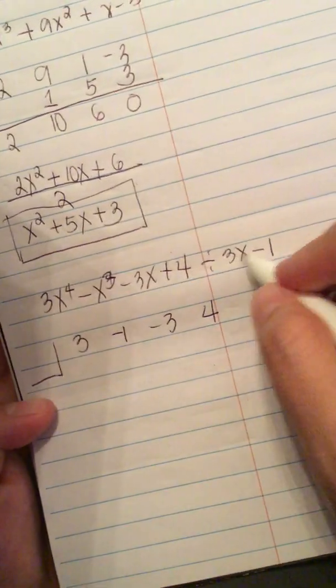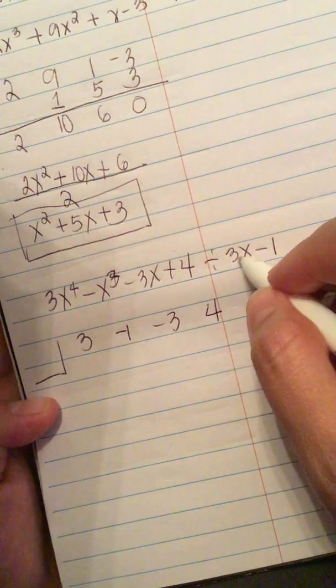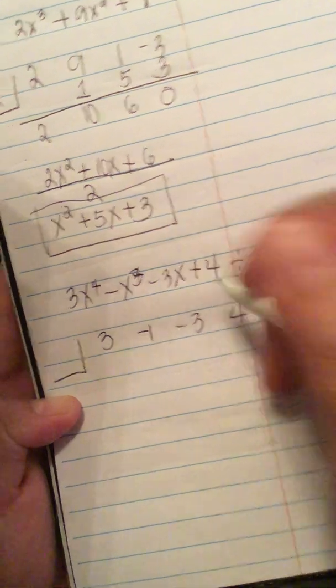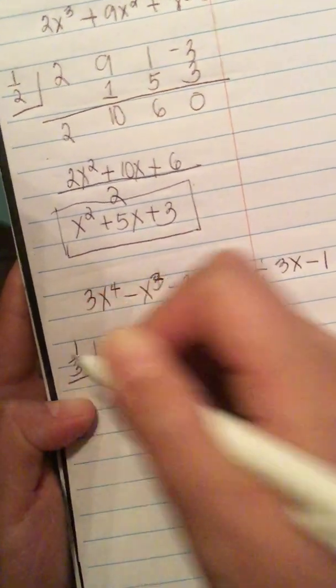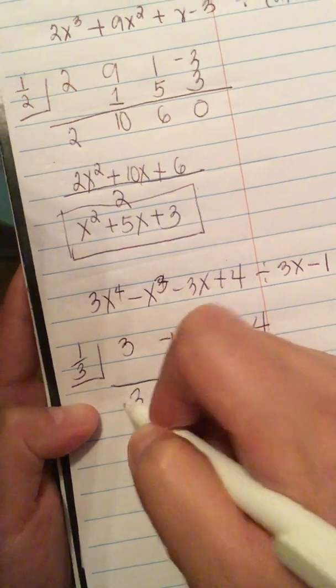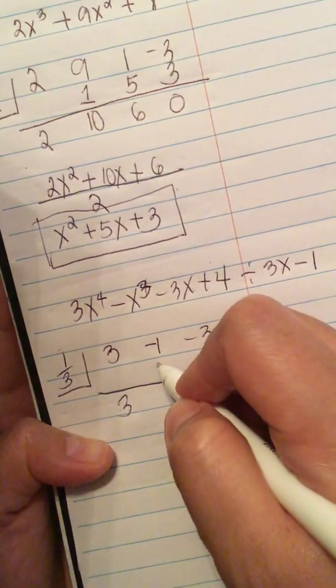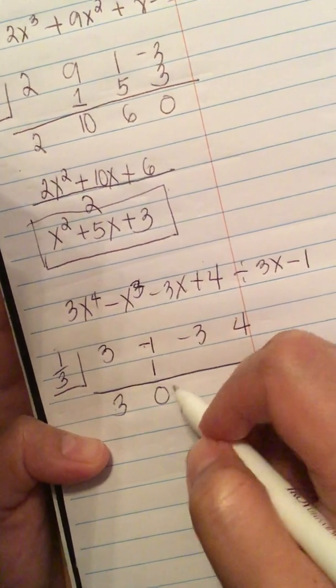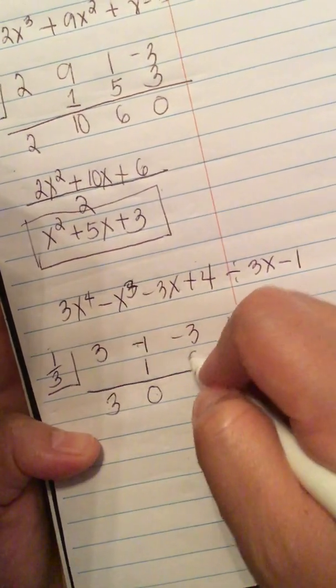And in here, we write down the root or the divisor. So this is 1 third. So we write down 3 here. And then 1 third times 3 is 1. Minus 1 and 1 is 0. And then 0 times 1 third is 0.